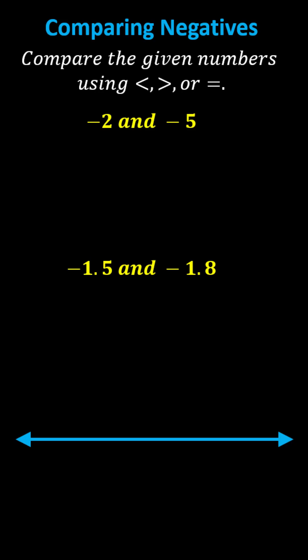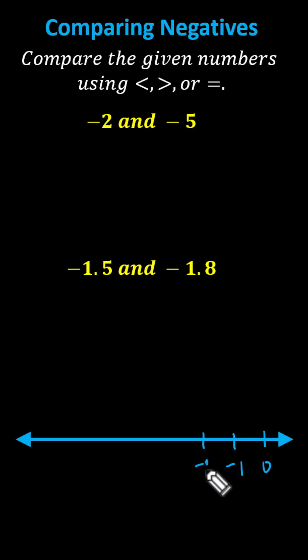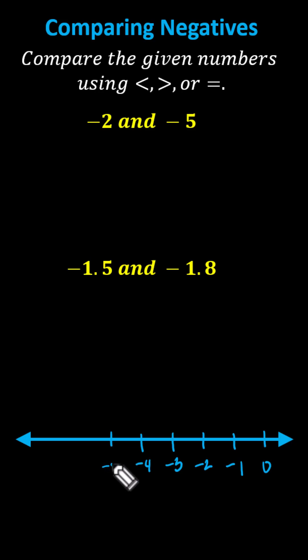Because both values are negative, we know they're less than 0. Going to the number line, let's label the right side 0, and then we'll count to the left: negative 1, negative 2, negative 3, negative 4, negative 5, negative 6, and so on.